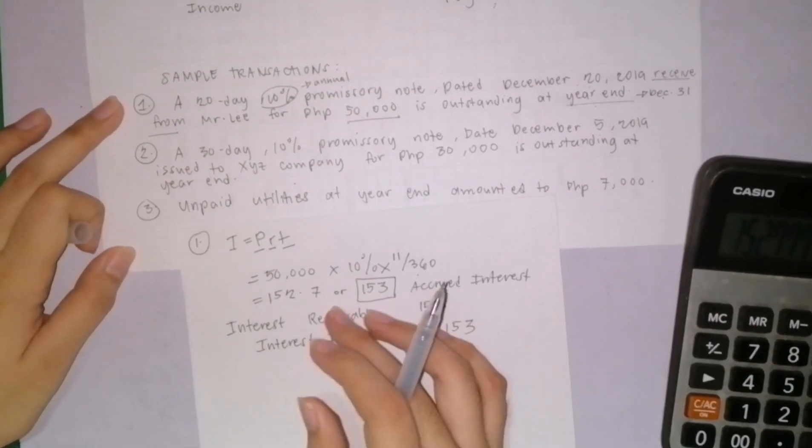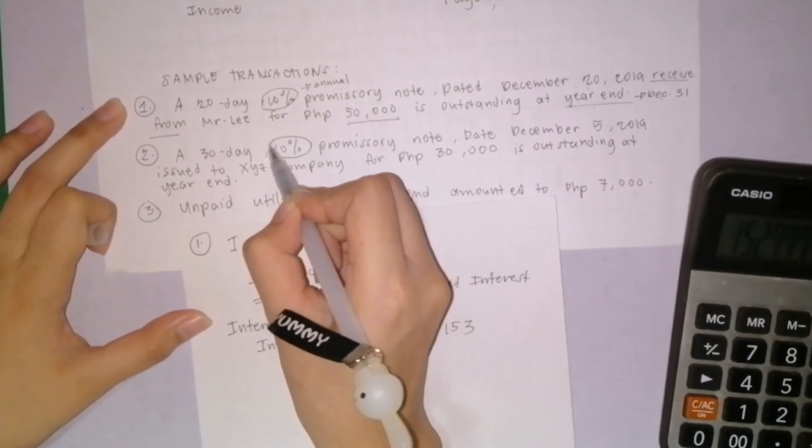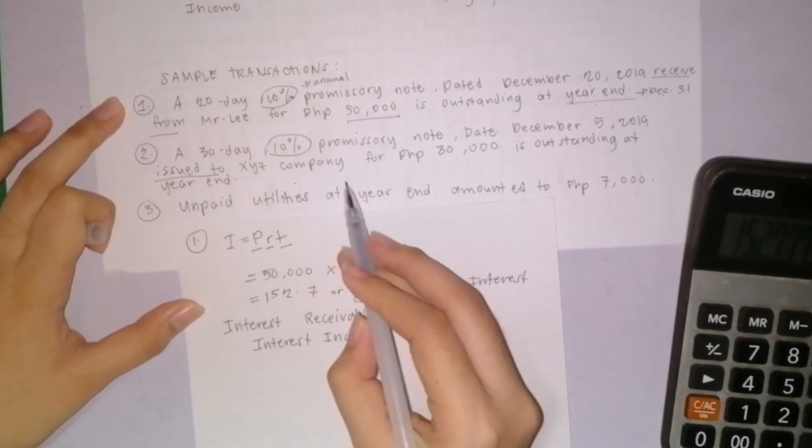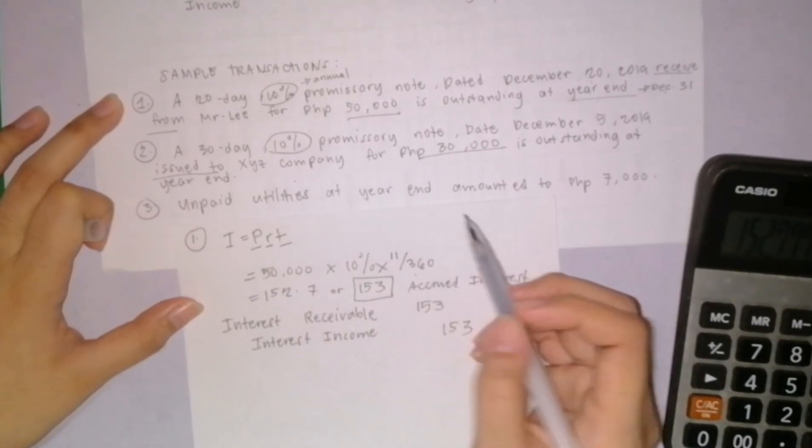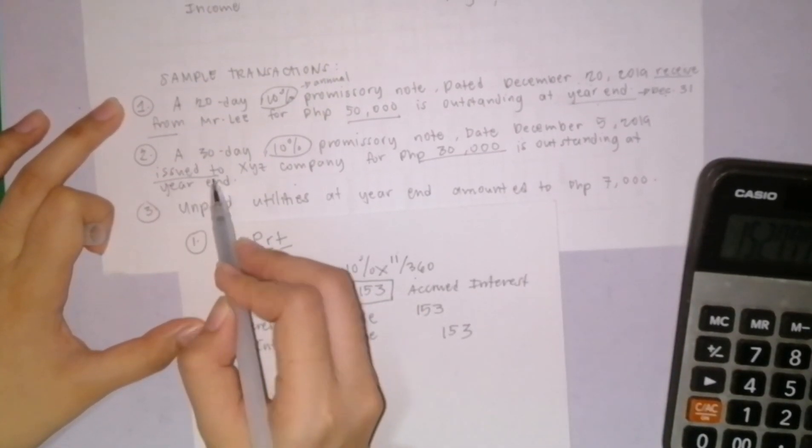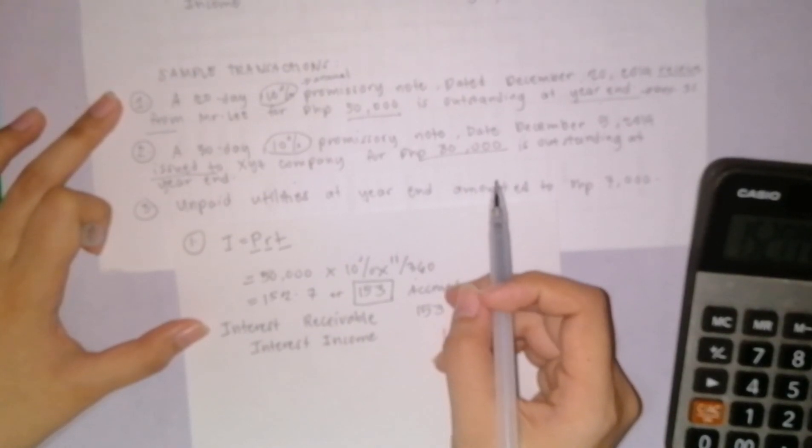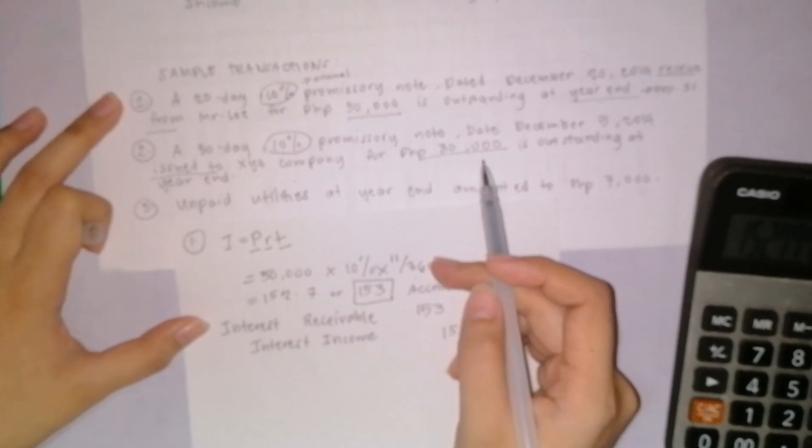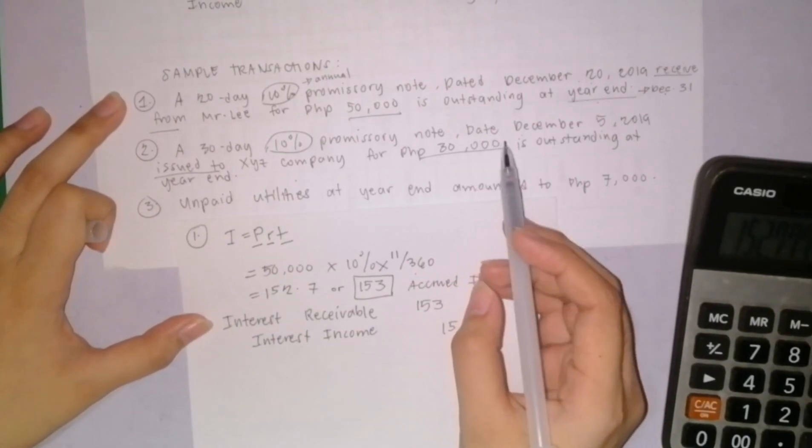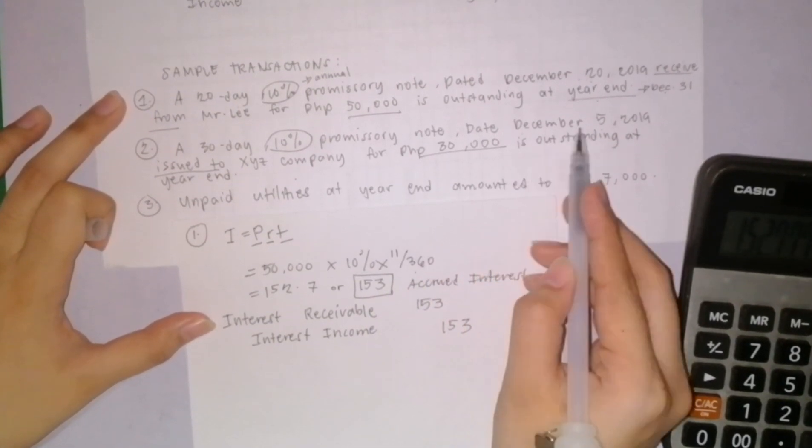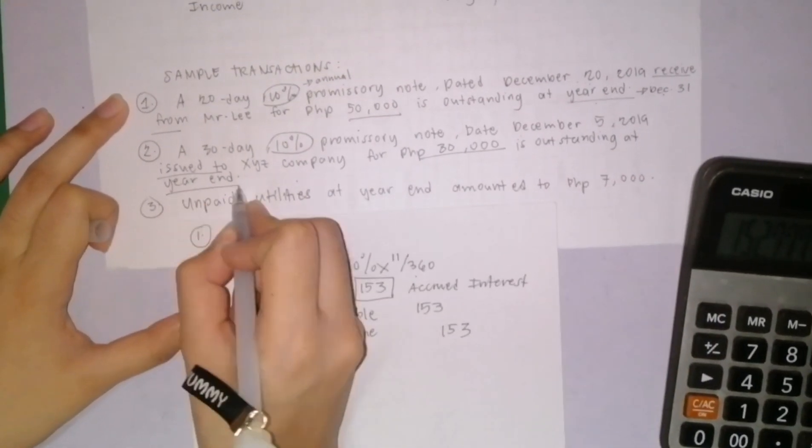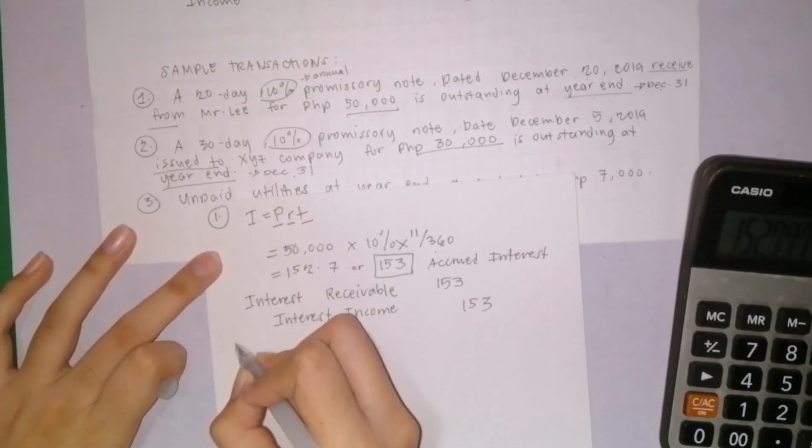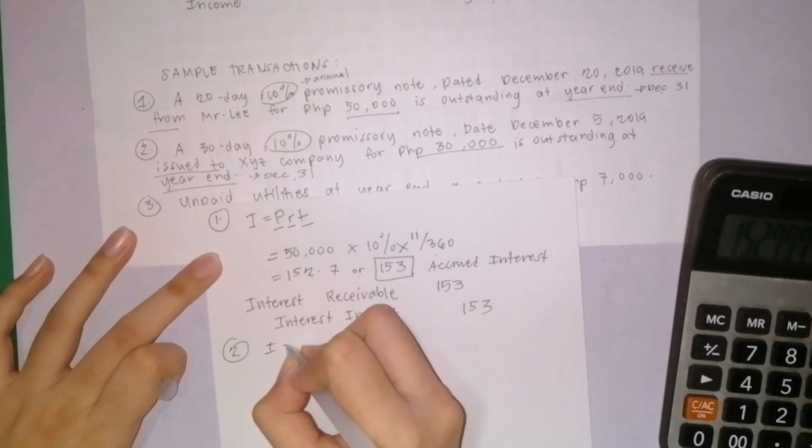Next problem number two: a 30-day 10% promissory note dated December 5, 2019 issued to XYZ company for 30,000 is outstanding at year-end. This time, we issued the promise to pay, so we have the payable and obligation. This is an example of accrued expense. The promissory note we issued is dated December 5, 2019 and is outstanding at year-end, December 31.